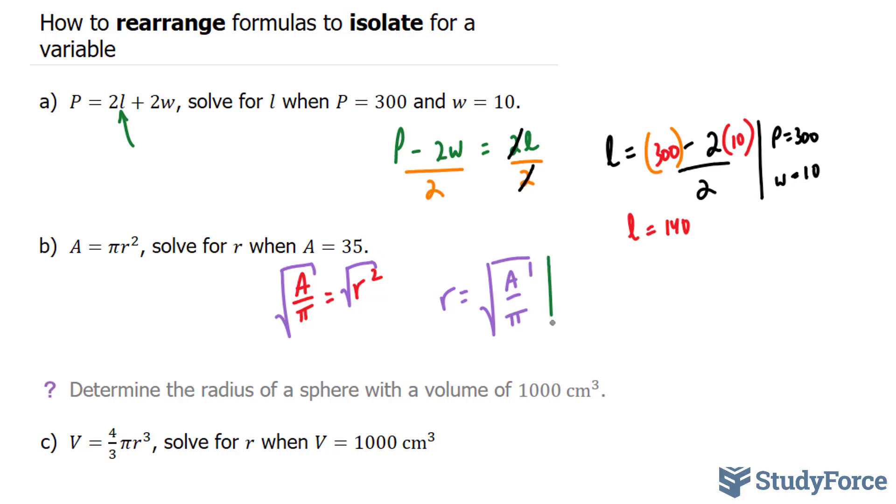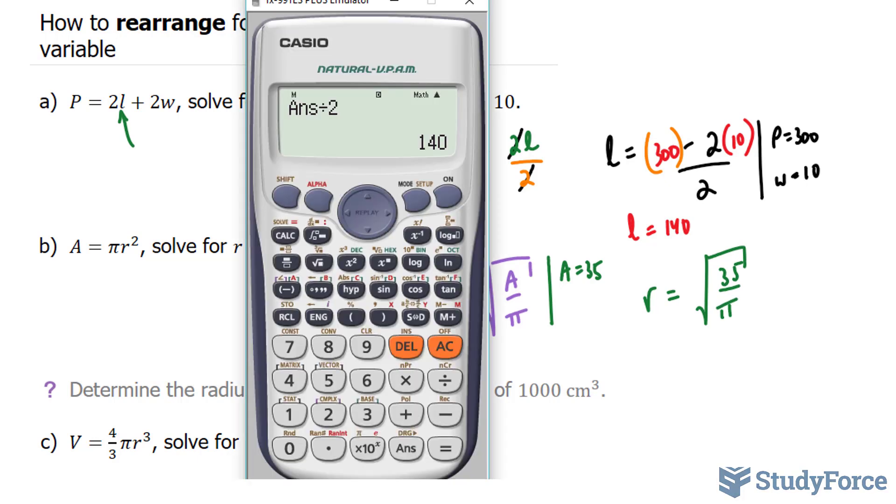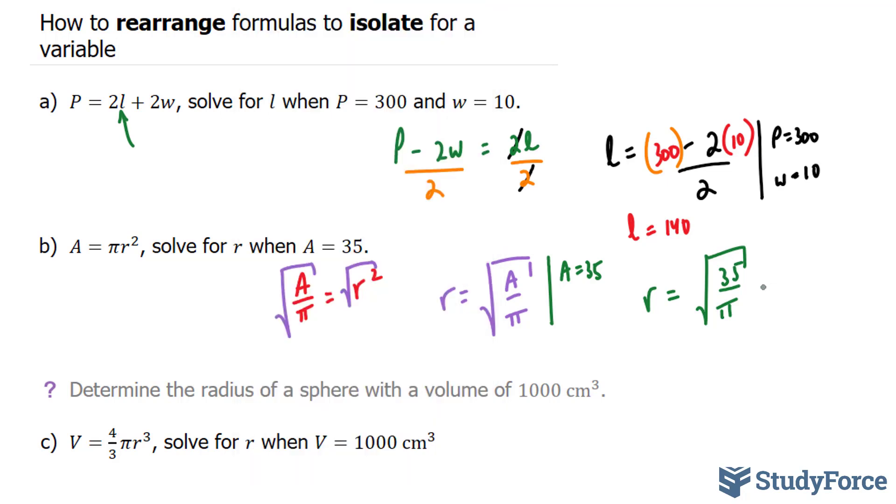Now I can substitute my 35 into my A, and if I do that, I end up with R is equal to the square root of 35 over pi, and this will give me my radius. So let's do this. Press the square root symbol, 35 divided by pi gives you 3.33. Now make sure that when you use your calculator, you actually use the pi symbol. Do not use 3.14. It will give you a number that's slightly off. So our final answer is 3.33.